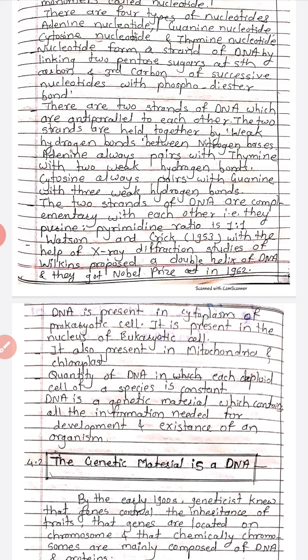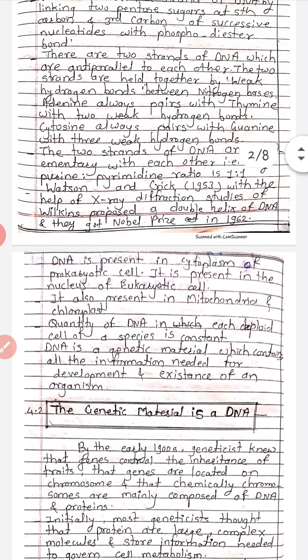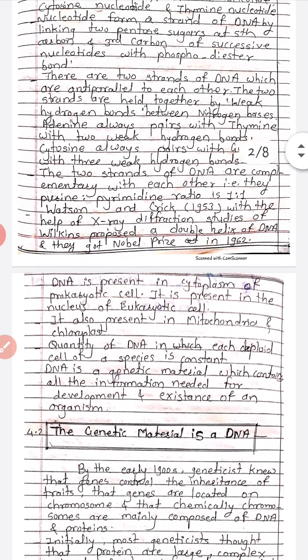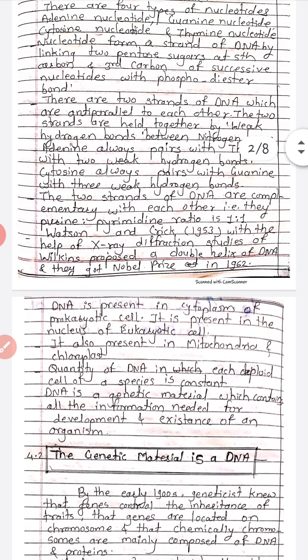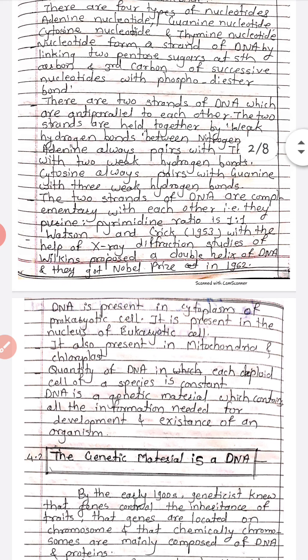The two strands of DNA are complementary with each other. The purine to pyrimidine ratio is 1 to 1.